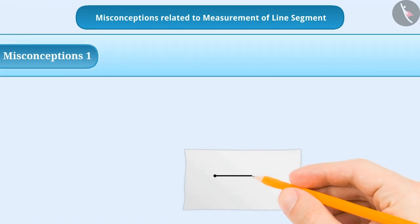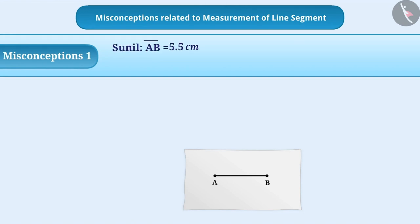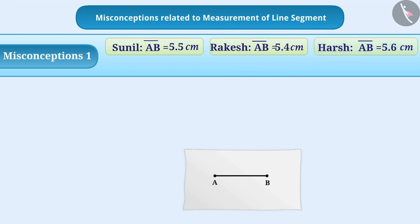Sunil drew a line segment. To measure the length of the line segment, he looked above the symbol and obtained the length as 5.5 cm. Rakesh sitting to his right attained a length of 5.4 cm. Similarly, Harsh sitting on his left attained a length of 5.6 cm. Find out who got the correct answer among the three.